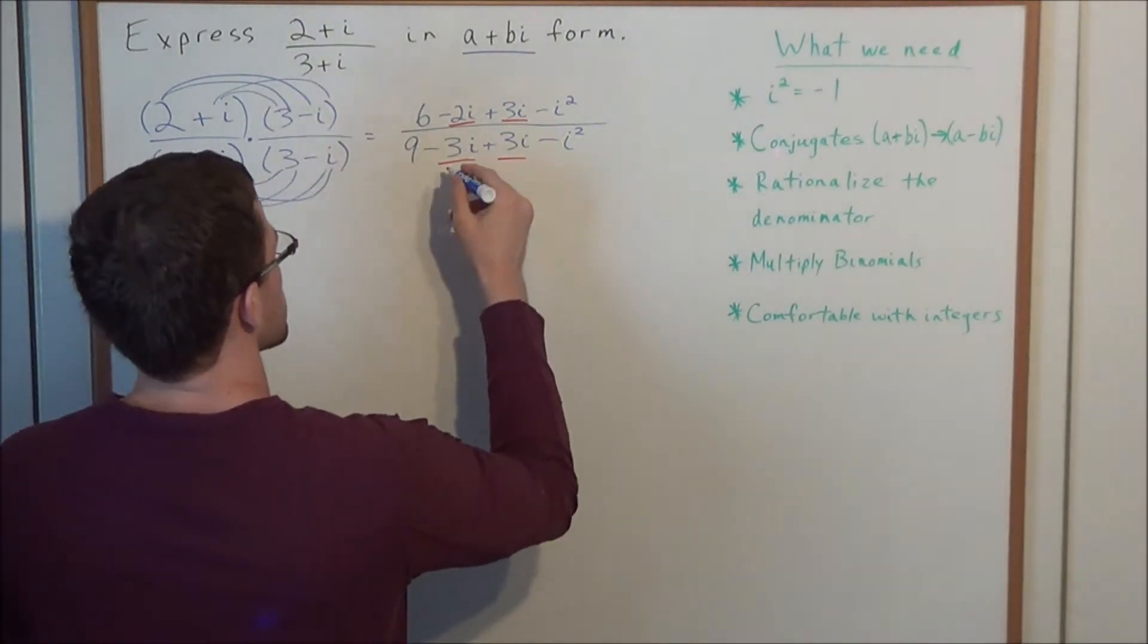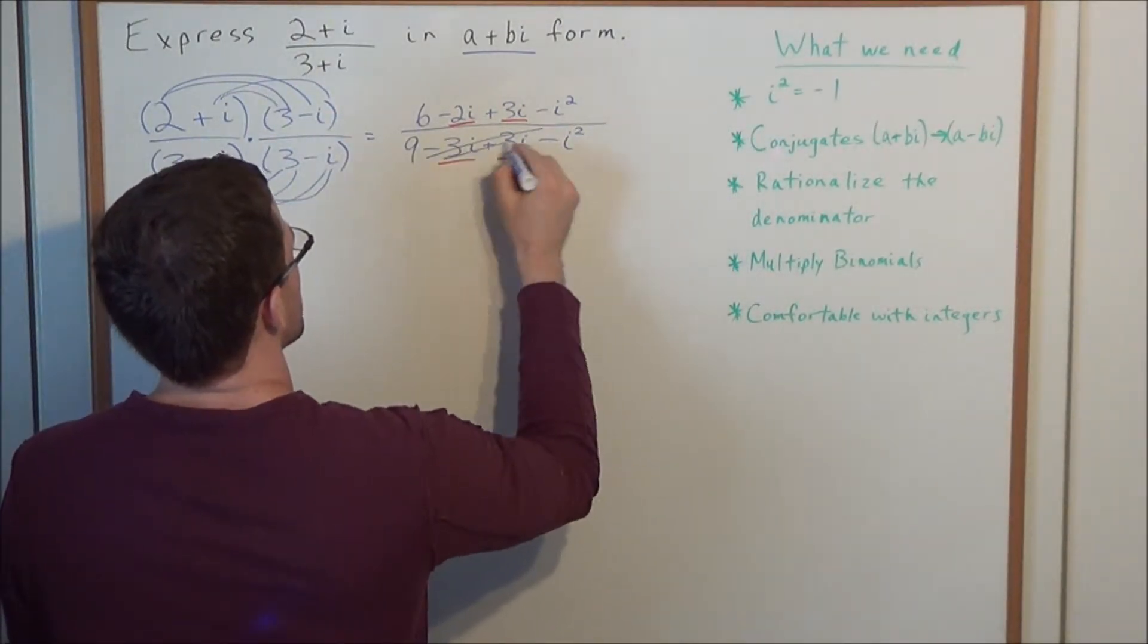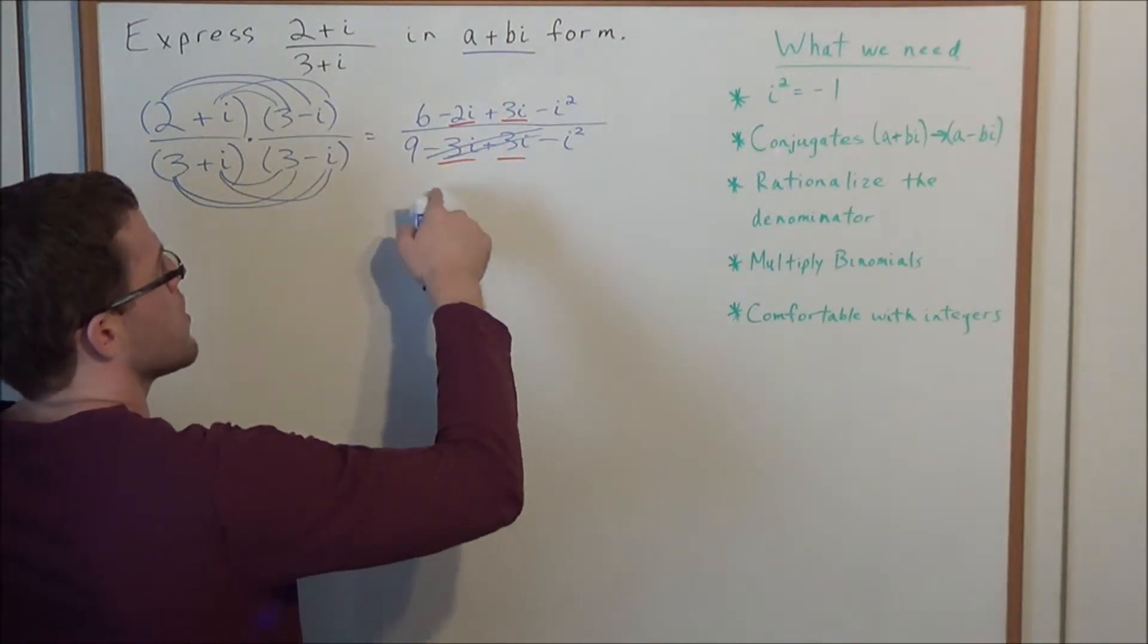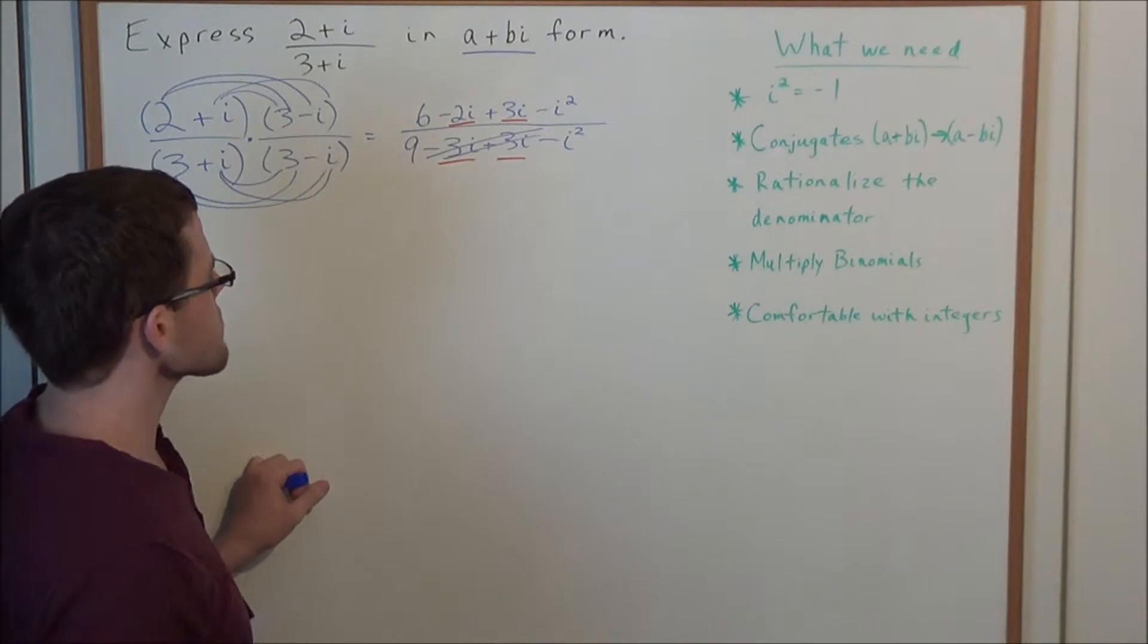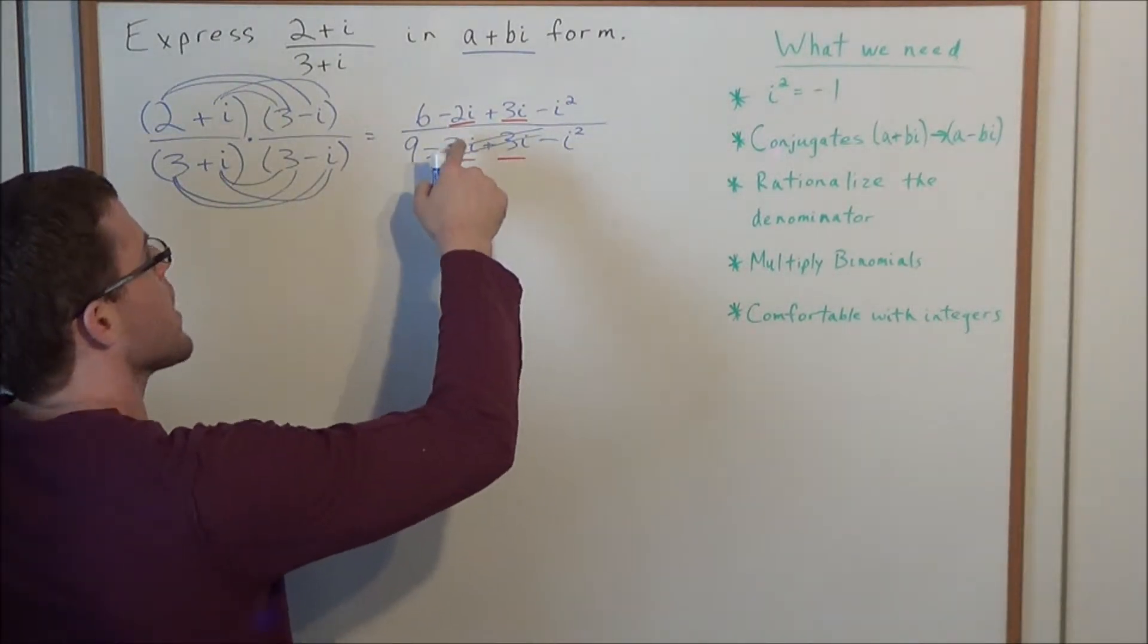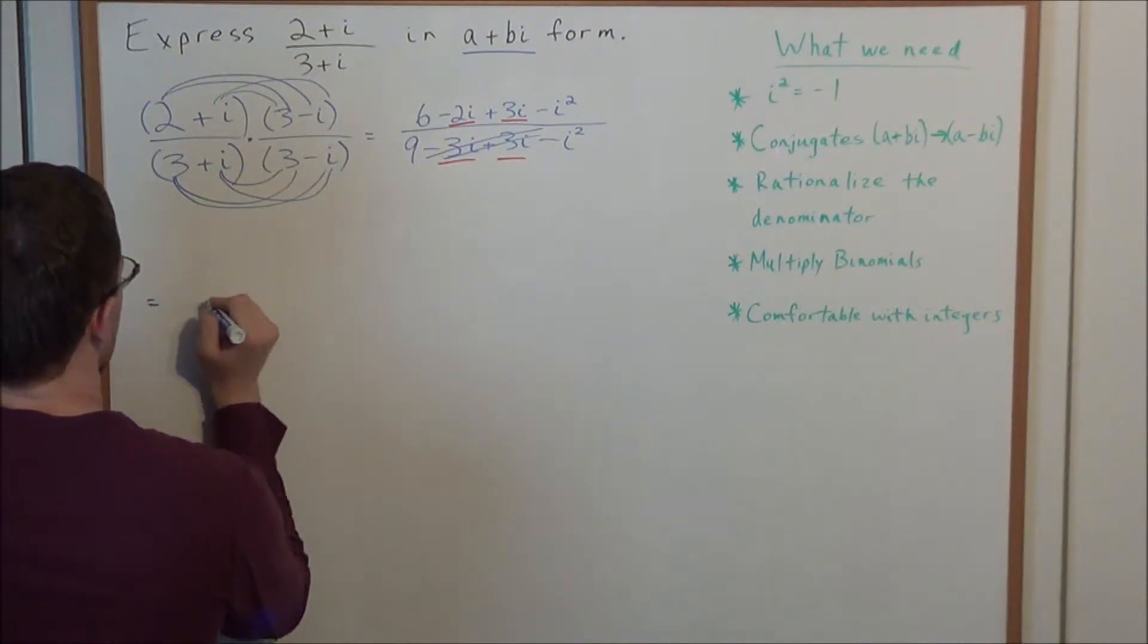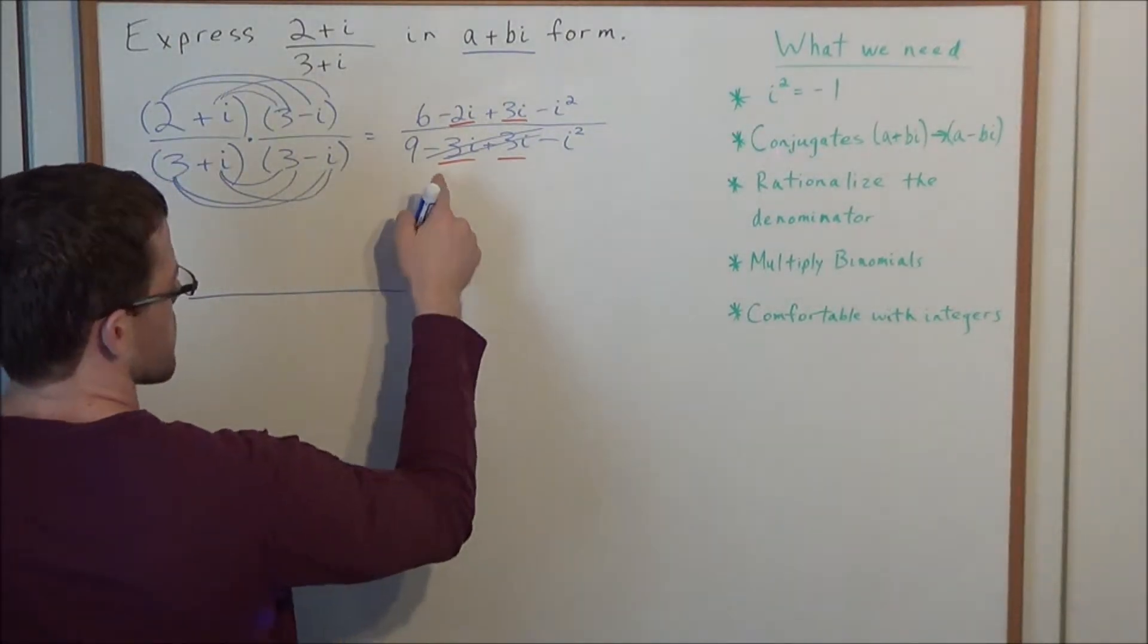Well, those two are going to cancel out. This is the effect we want when we rationalize the denominator. We want to, in some sense, cancel out those middle terms. And in the numerator, we have a negative 2i plus 3i. So now when we simplify, we'll go ahead and simplify this first.